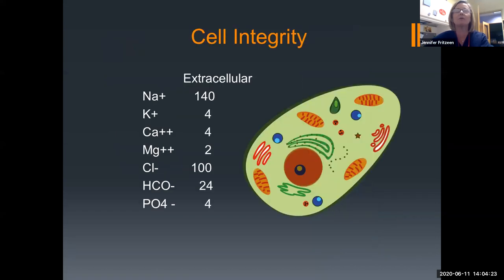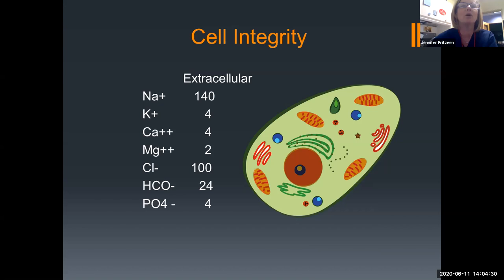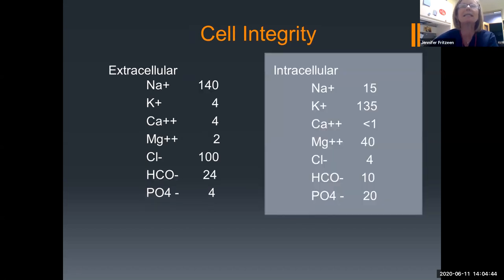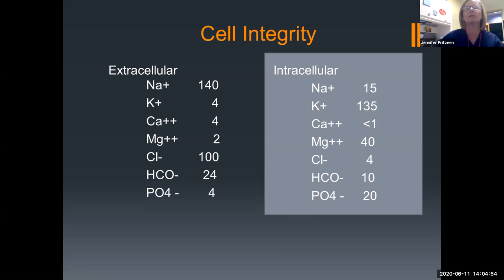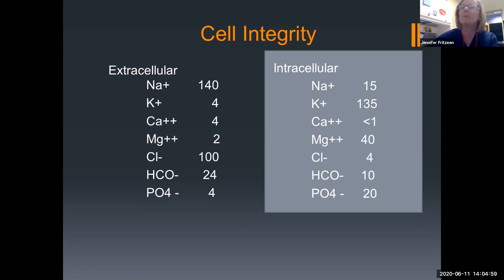If you love the Krebs cycle, you'll love the sodium-potassium pump. If we look at the integrity of a cell, everybody knows these numbers from your BMP: sodium is 140, potassium normal is 4, chloride normal is 100, bicarb is 24. But when we look at what these numbers look like inside the cell, they are incredibly different — there's no 50-50 ratio anywhere between ions inside the cell versus outside the cell. And so if that cell wall breaks down, bad things are going to happen.